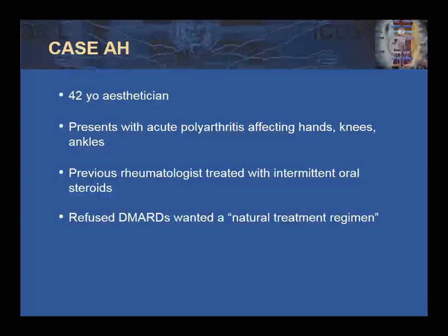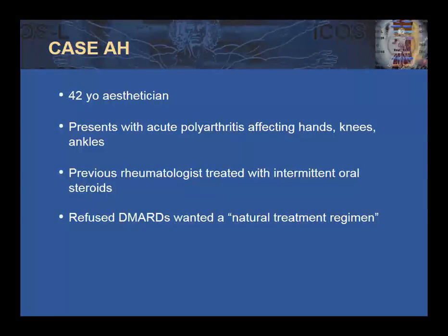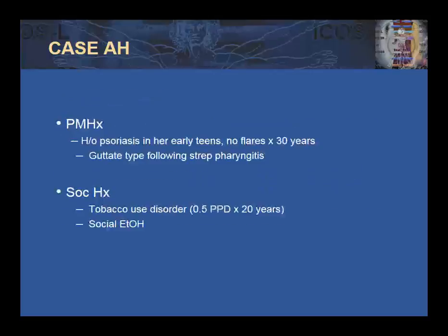Our presentation will follow a case, and our patient's initials are AH. She's a 42-year-old esthetician who presents with acute polyarthritis affecting her hands, knees, and ankles. She did have a previous rheumatologist who treated these symptoms with intermittent oral steroids, in part because she had refused DMARDs, seeking a natural treatment regimen instead. Her past medical history is significant for psoriasis, which began in her early teen years; however, she has not had a flare of her disease in approximately 30 years.